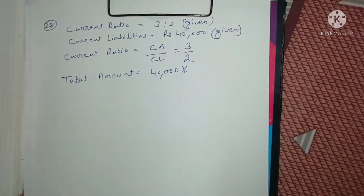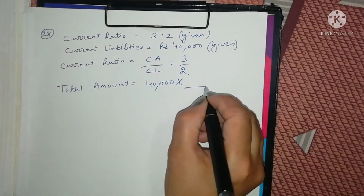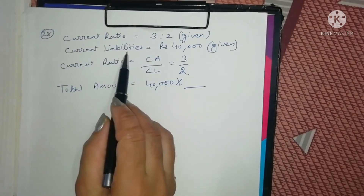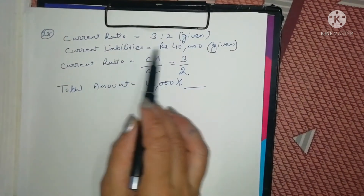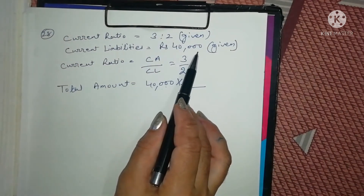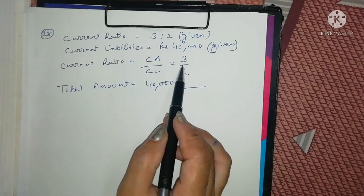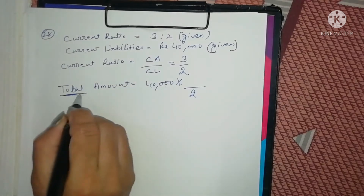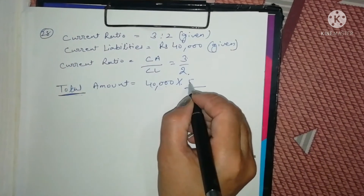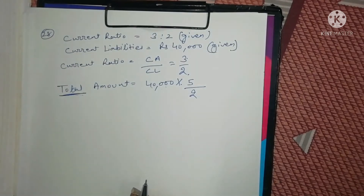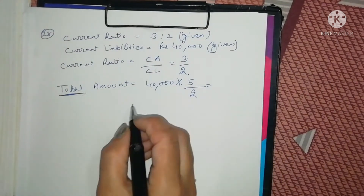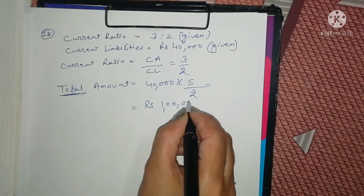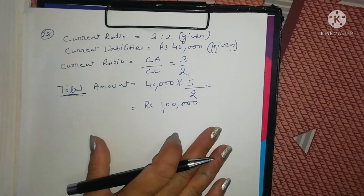We will calculate the total amount using the current liabilities and current ratio. The current liabilities figure is rupees 40,000 and the current ratio is 3:2, where current liabilities represent 2. That's why we divide by 2 and find the gross value. We add 3 plus 2 from the ratio to get 5, so we calculate: 40,000 divided by 2 multiplied by 5.